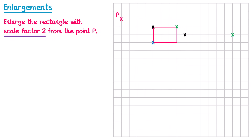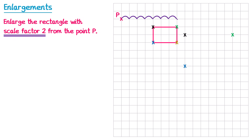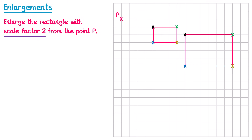Now the bottom left: from the centre of enlargement to the blue cross is 4 to the right and 3 down. Repeat that once more — 4 right, 3 down — and the blue cross goes here. For the bottom right, we go 7 to the right and 3 down, then repeat: 7 right, 3 down, placing the final cross. Joining up these crosses makes the enlarged rectangle in the correct place.